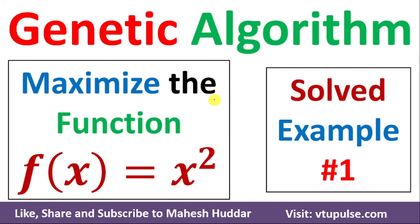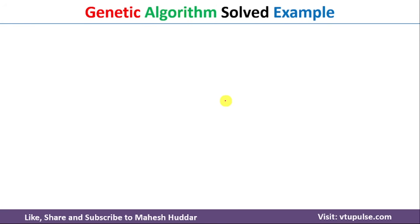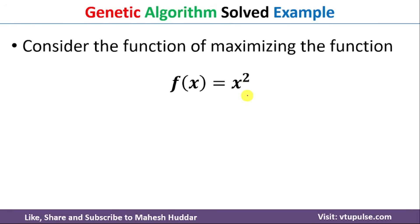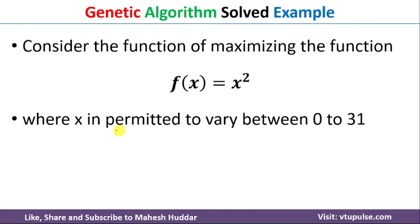Welcome back. In this video I will discuss how to apply genetic algorithm to maximize the value of a function f(x) = x². This is solved example number one; the link for other examples is given in the description below. The main aim of this problem is to maximize the value of this function, with permitted values for x between 0 and 31.